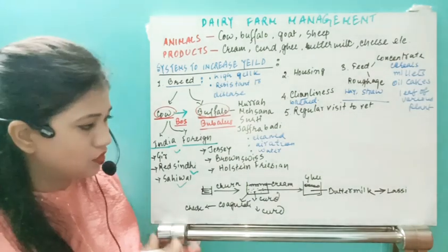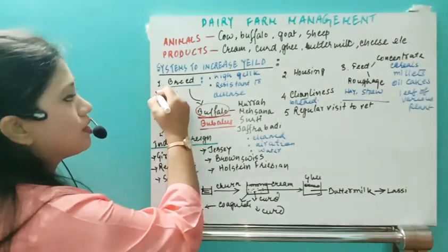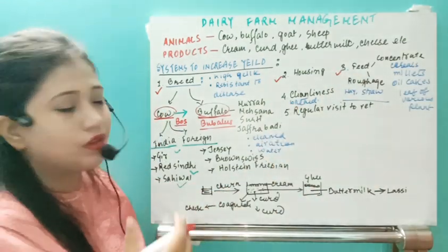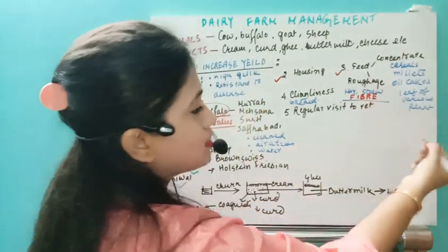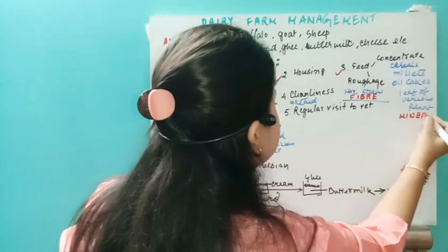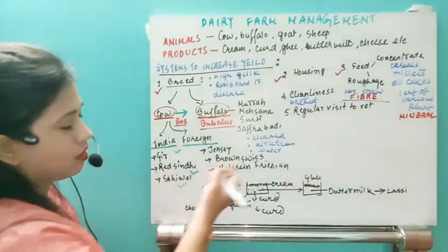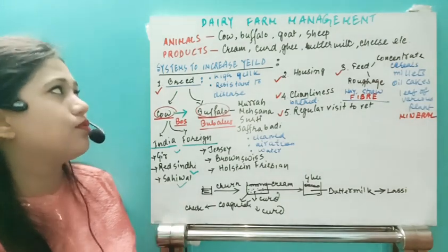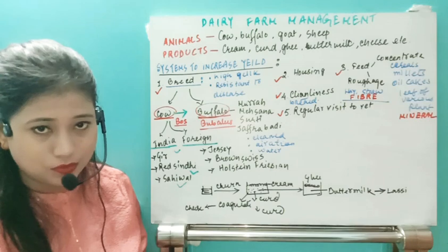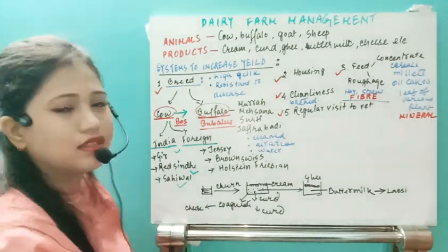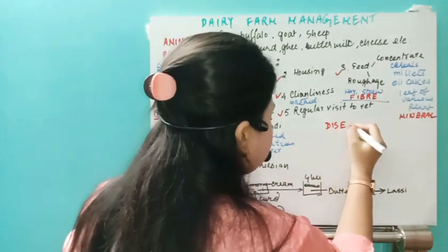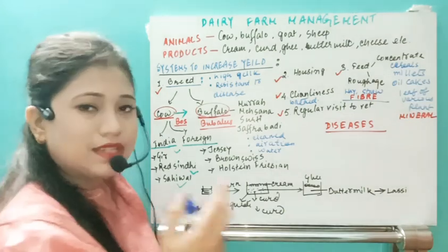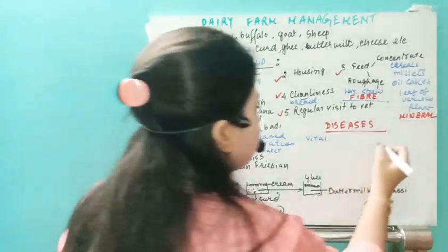To summarize dairy farm management, the key points are: first, breed selection; second, housing; third, feed — roughage (high fiber content) and concentrates (high mineral content); fourth, cleanliness; and fifth, regular visits to the vet. These five points must be maintained for dairy farm management.